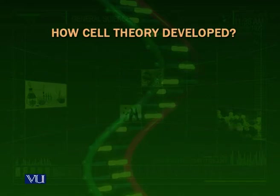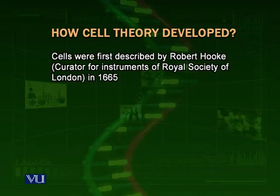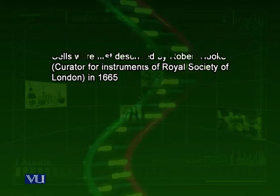Now we look at how this theory developed. Cells were first described by Robert Hooke, who was the curator of instruments of the Royal Society of London. In 1656, he made a simple type of microscope by using different types of lenses to magnify different things.